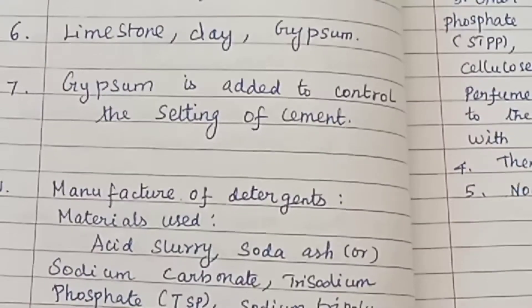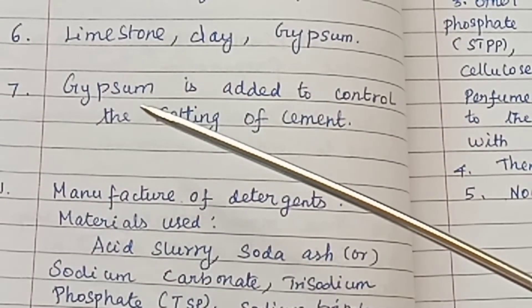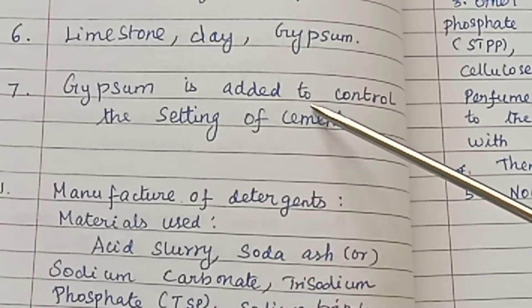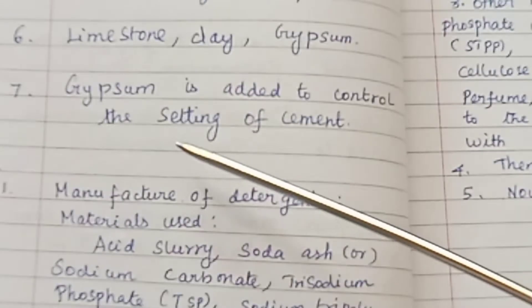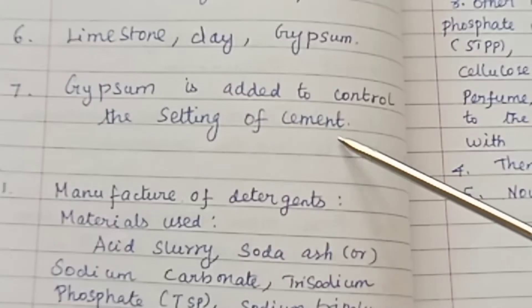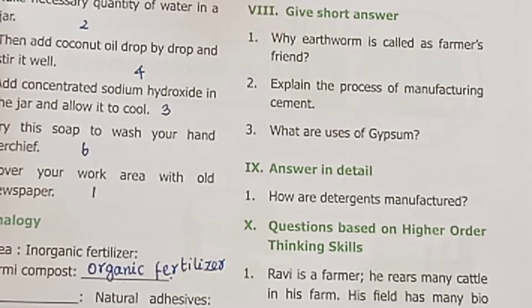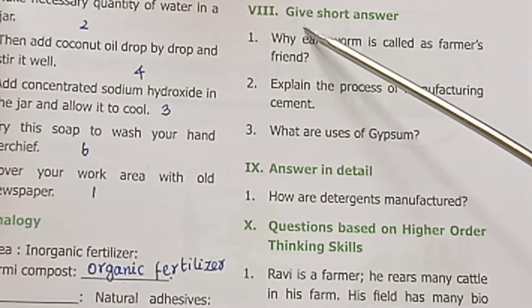7. Why is gypsum used in cement production? Gypsum is added to control the setting of cement.